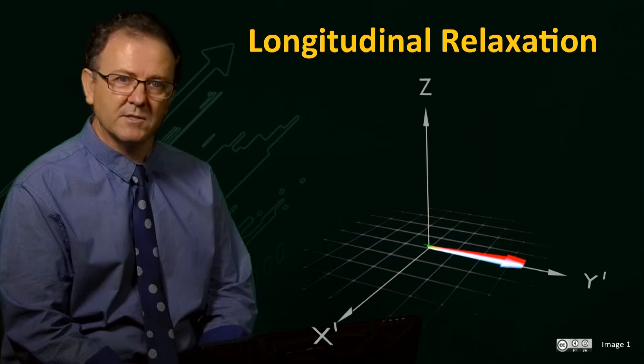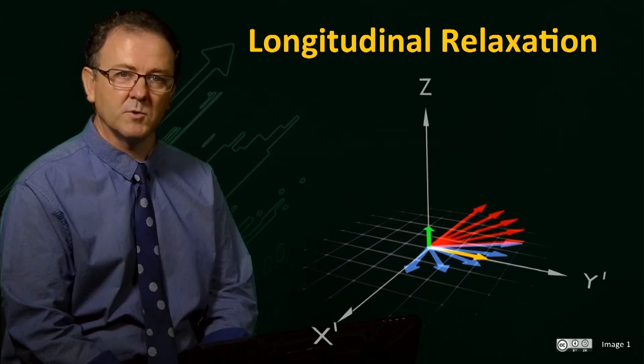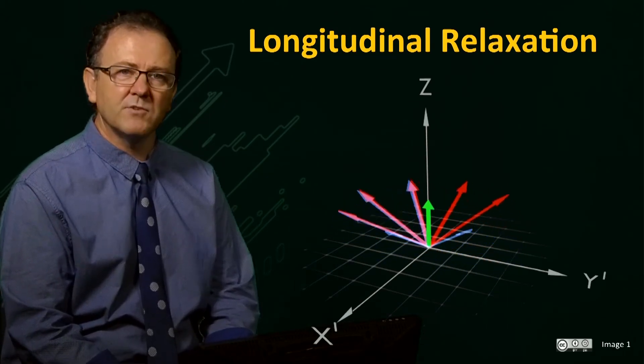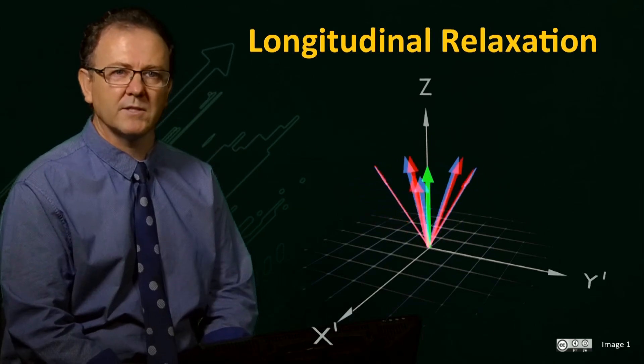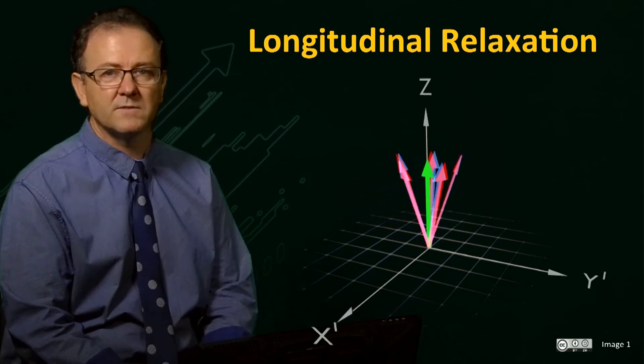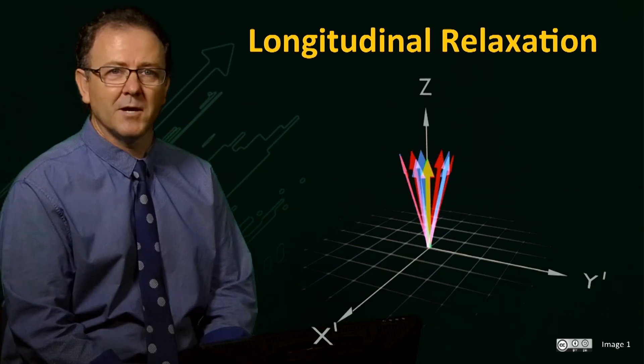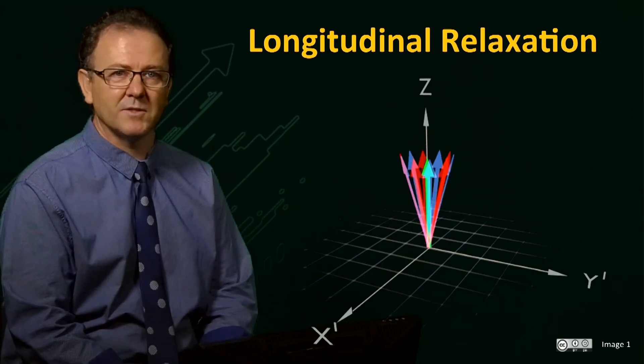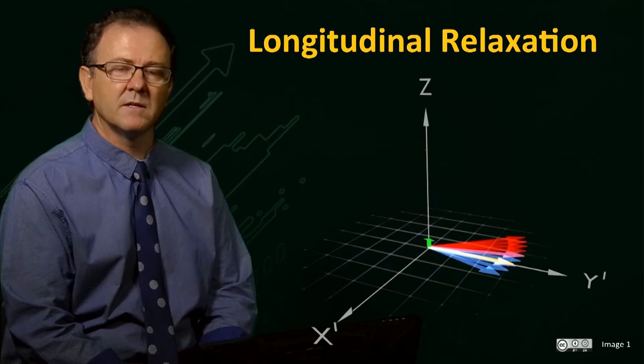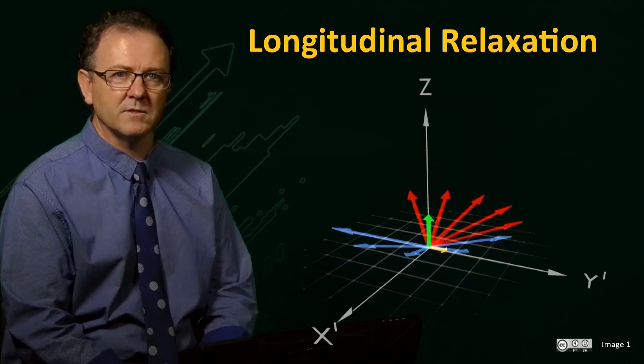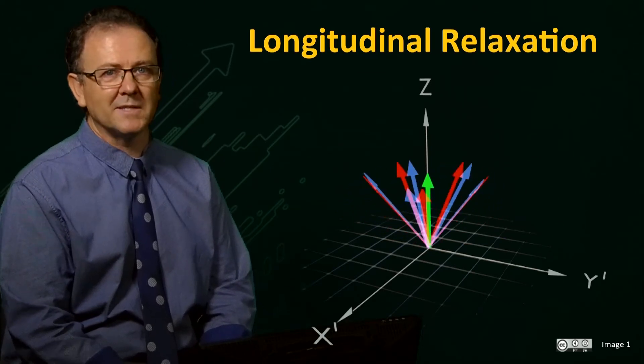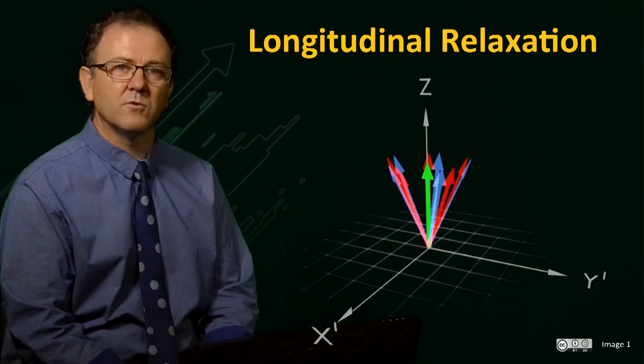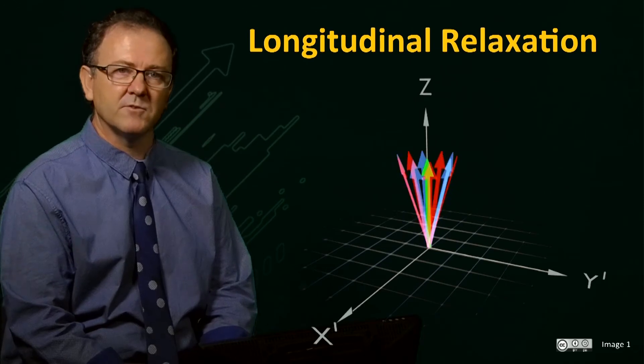So, longitudinal relaxation and transverse relaxation occur simultaneously. Generally, the relaxation mechanisms that contribute to longitudinal relaxation also cause transverse relaxation. However, there are additional relaxation processes that contribute to transverse de-phasing, and so longitudinal relaxation is normally slower than transverse relaxation. In some cases they may be equal, but longitudinal relaxation is never faster than transverse.